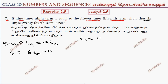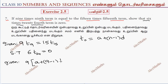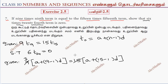Tn is equal to a plus (n minus 1) into d. So, 9 into T9 means 9 into bracket: a plus (9 minus 1) into d, which is equal to 15 into bracket: a plus (15 minus 1) into d. Now 9 and 15 — dividing by 3 — gives us 3 and 5.